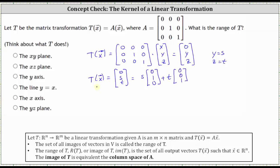So all the output vectors are linear combinations of the vectors (0, 1, 0) and (0, 0, 1), which are the standard basis vectors E2 and E3 in R^3.